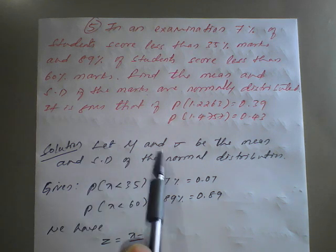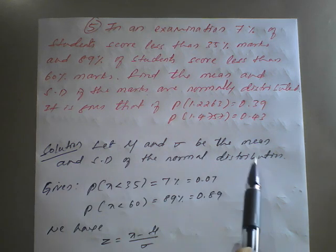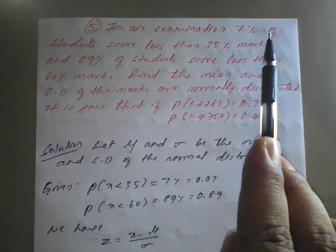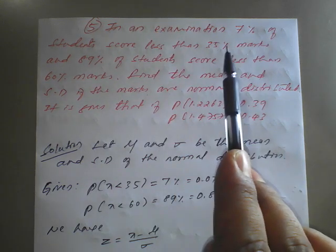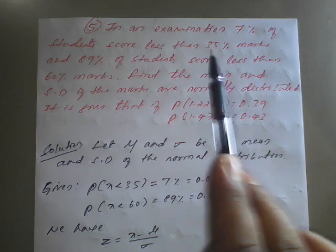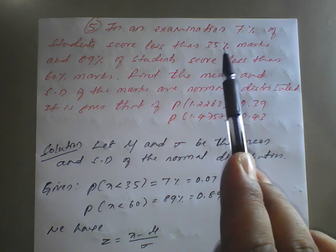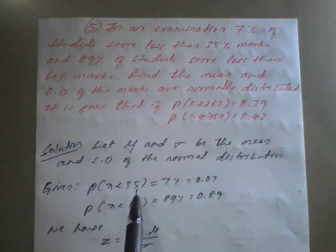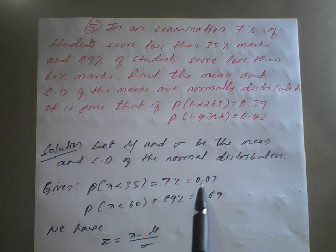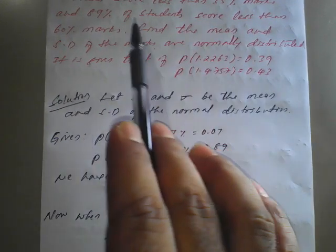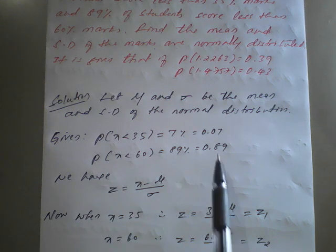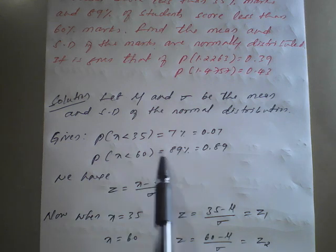Let μ and σ be the mean and standard deviation of the normal distribution. 7 percent of students score less than 35 marks means P(X < 35) = 0.07. 89 percent score less than 60 marks means P(X < 60) = 0.89. When X = 35, Z = (35 − μ) / σ = Z₁, and when X = 60, Z = (60 − μ) / σ = Z₂.